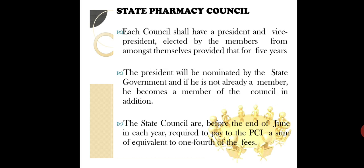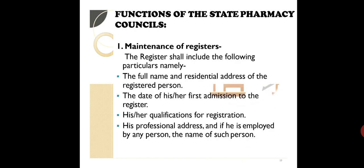Having discussed the composition of both the state pharmacy council and joint state pharmacy council, some further points about the state pharmacy council: each council has a president and a vice president elected by the members from amongst themselves, with a tenure of 5 years, after which members are eligible for re-nomination or re-election. The president is nominated by the state government and, if not already a member, becomes one in addition. The state council is required, before the end of June each year, to pay to the PCI a sum equivalent to one-fourth of the fees.